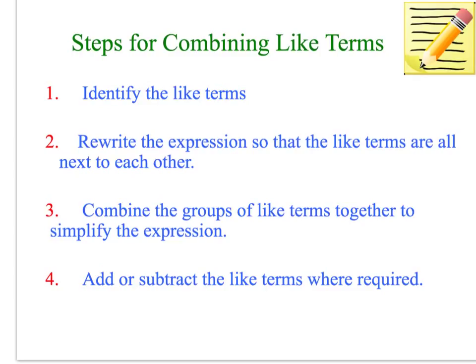We're going to collect the like terms. Now first of all, I need to identify the ones that are the same. So we've got, in this one, 7b and 3b are the same. Whoops, look what I did see. That is part of it. So the 2 is a constant. It hasn't got a variable with it, so it is not the same.